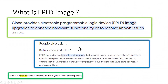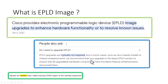What is EPLD? Cisco provides Electronic Programmable Logic Device (EPLD) image upgrades to enhance hardware functionality or to resolve known issues. EPLD upgrades are typically not required. But in some cases, such as new chassis installs or chassis redeployment, Cisco recommends upgrading to the latest EPLD version to ensure all upgradable hardware components have the latest feature enhancements and caveat fixes.